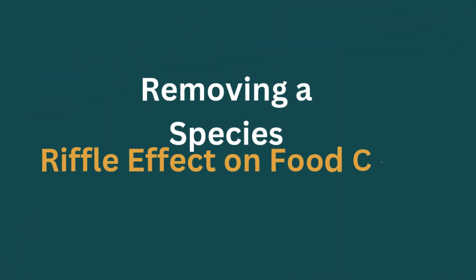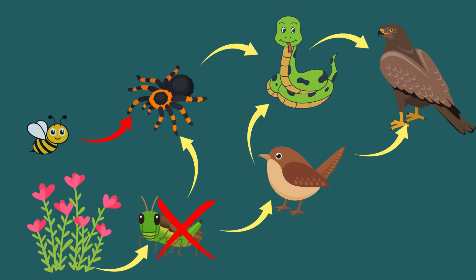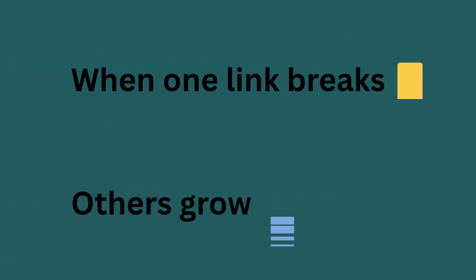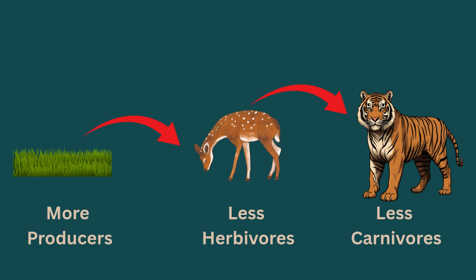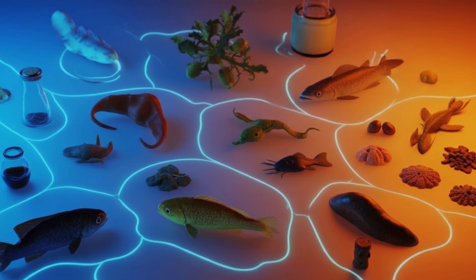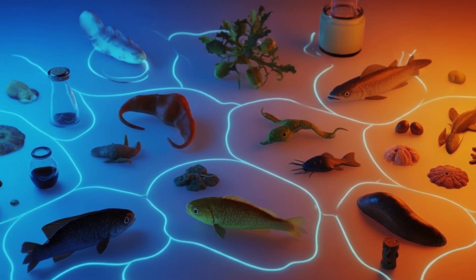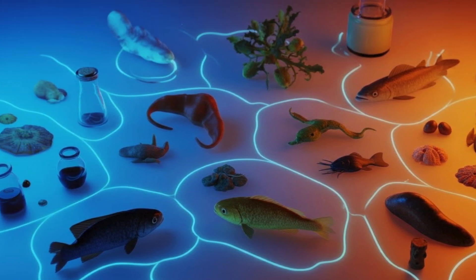What would happen to a food chain if any one link disappears? For example, if all grasshoppers are removed, spiders eat more bees, and the population of bees would decline. The ripple effect continues. So when one link breaks, others grow. Fewer herbivores mean more plants. Fewer herbivores also mean fewer carnivores. Food chains and webs show how nature is connected — one small change can shift an entire system.